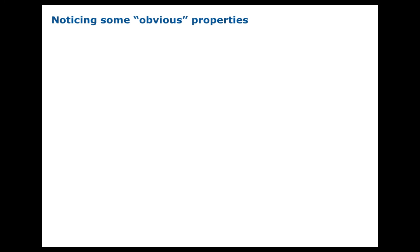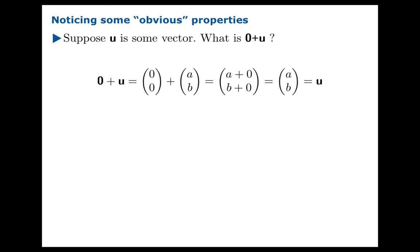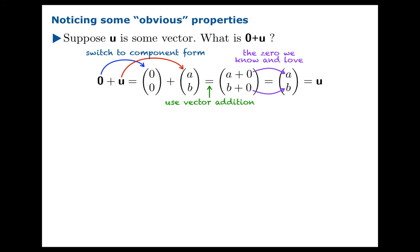Let's notice some obvious properties — they seem obvious mostly because the definitions have been created so that they work out nicely, but you really need to think about why these things are true. What is the zero vector plus u? Substituting in component forms: suppose u has components a and b. The zero vector has components 0 and 0. Applying vector addition gives a plus 0 and b plus 0, which gives you back exactly u. So zero plus u equals u, where zero is the zero vector. The moral of this story is the zero vector is the identity for vector addition.